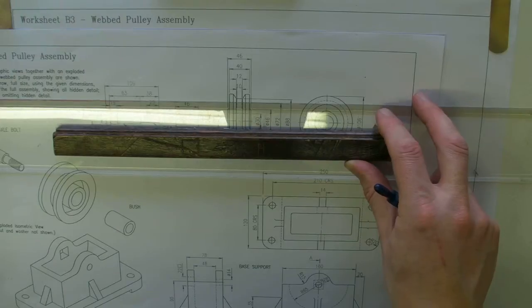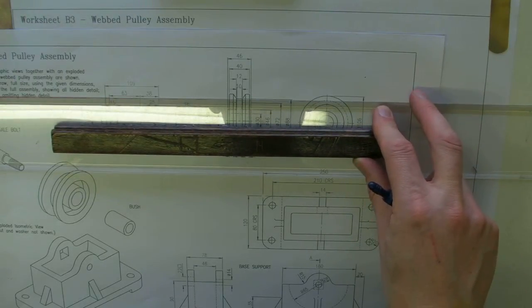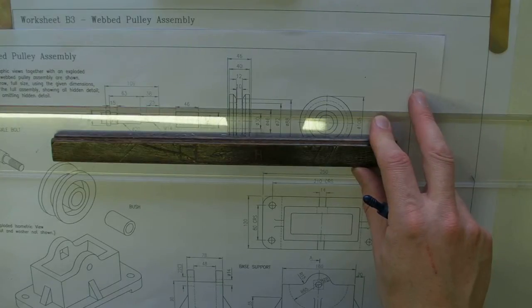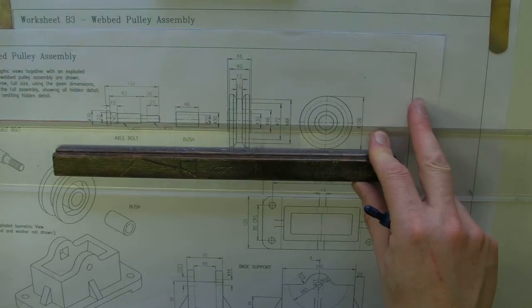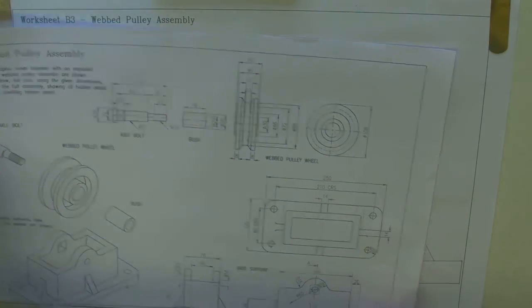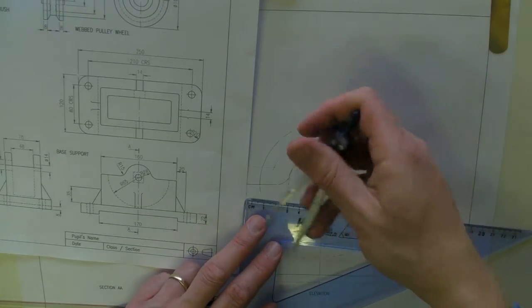Okay, the hidden detail one there is 88. Okay, so the hidden detail one, which is showing a part that we can't see, is 88. So that's 44.